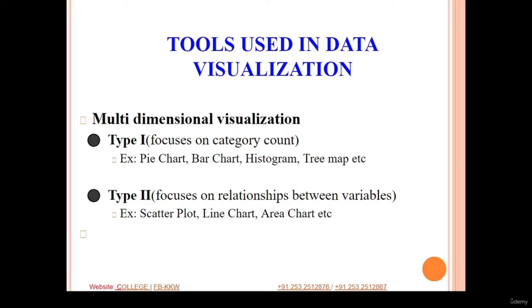Type one actually focuses on the category count. That means whatever data you have, you are interested in the amount of data, meaning the count of data that is available. We usually represent the count of any particular attribute or feature using different types of charts like pie chart, bar chart, histogram, tree map, etc. All these types of charts belong to type one, because here we focus on the category count.